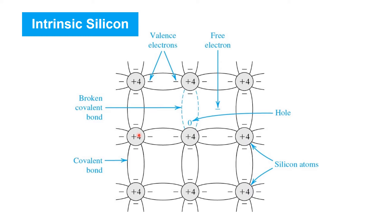Even at room temperature or below, thermal energy will allow a tiny fraction of those electrons to break free from their covalent bonds, producing a free electron. These free electrons can move freely through a semiconductor in response to electric fields or other forces, and as they do so, they carry current. That's current flow in a semiconductor, and we call the free electron a charge carrier.